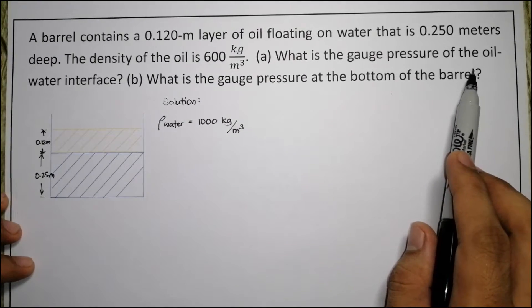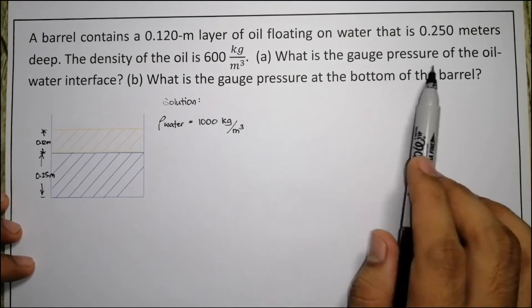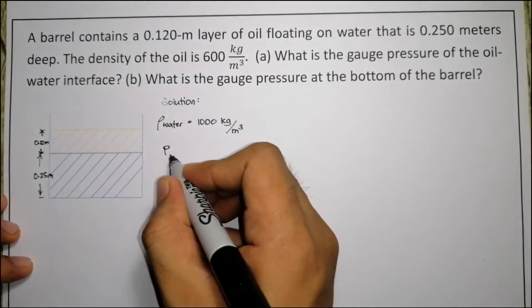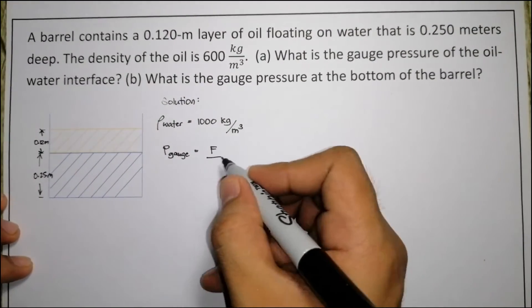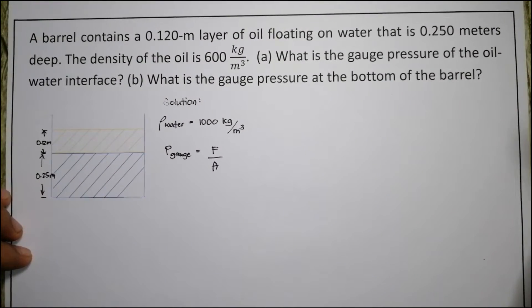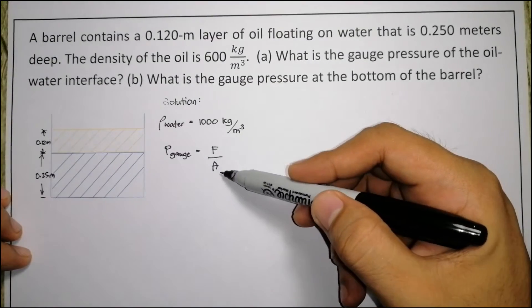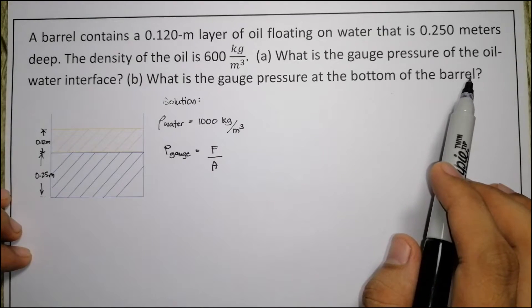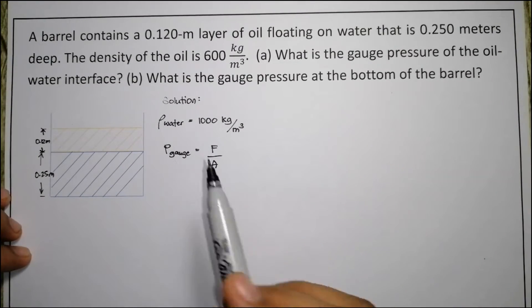For letter A, we need to find the gauge pressure at the oil-water interface. The formula for gauge pressure is P_gauge equal to force divided by area. Looking at the given values, there is no force in Newtons provided, so we need to derive the formula for gauge pressure.